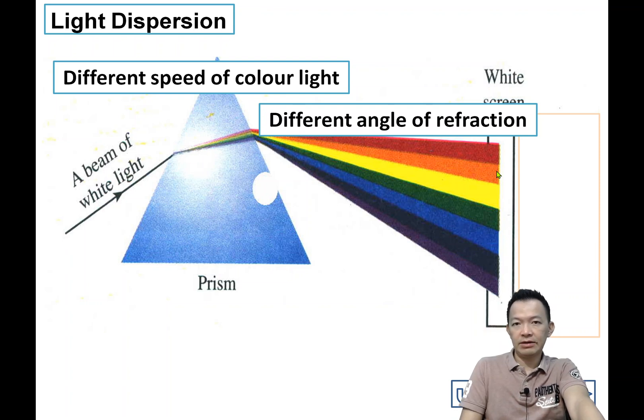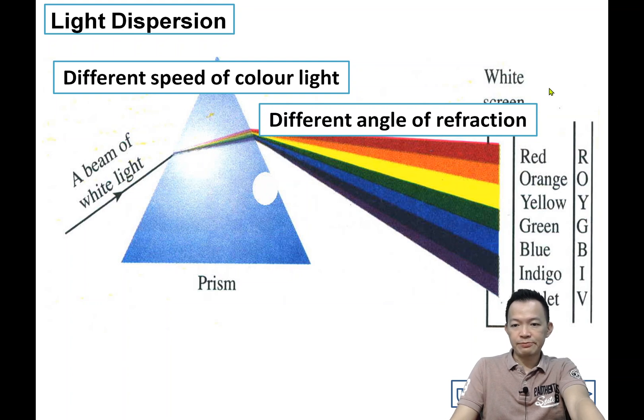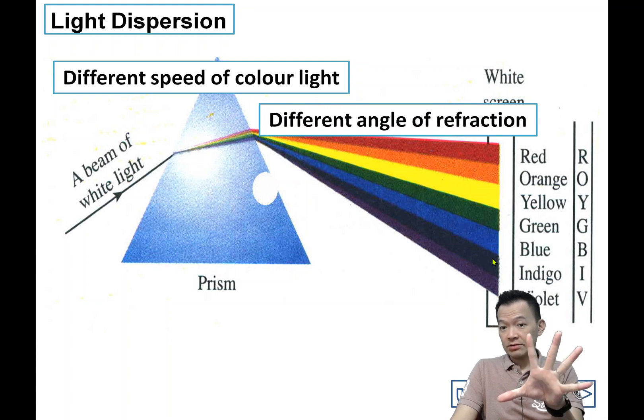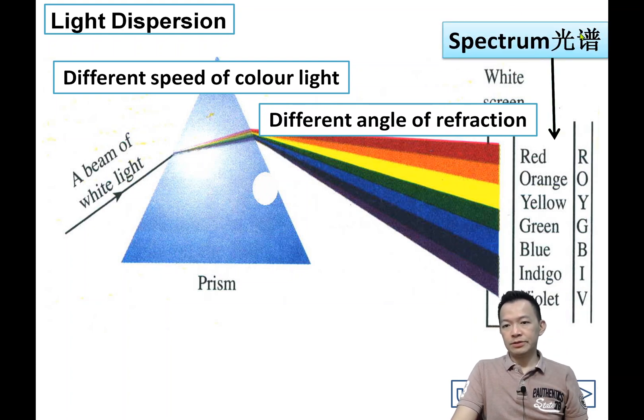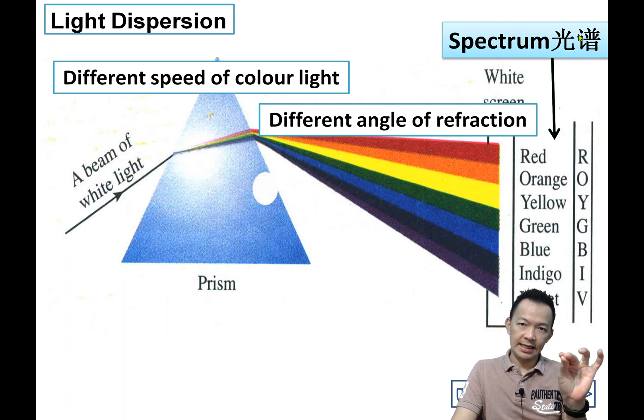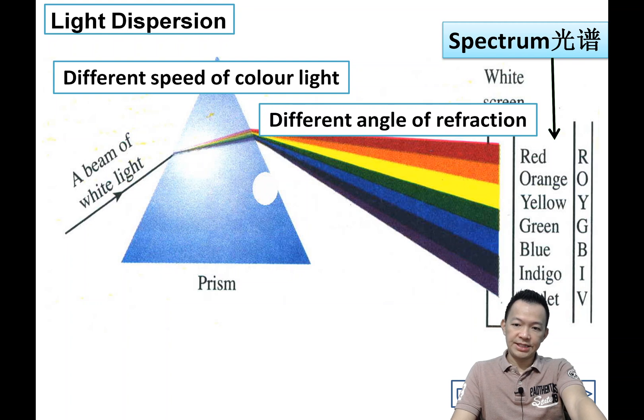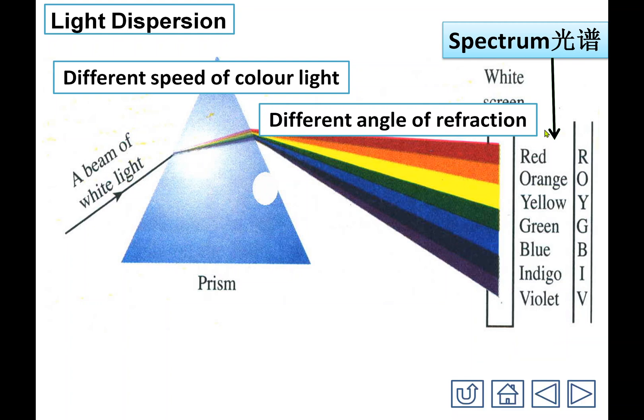When all the seven colors are separated, we can see a spectrum. We don't call it rainbow, we call it spectrum. The spectrum has an arrangement of colors: Red, Orange, Yellow, Green, Blue, Indigo and Violet.